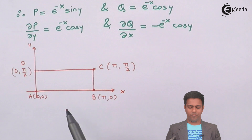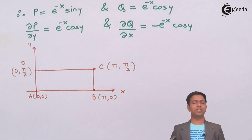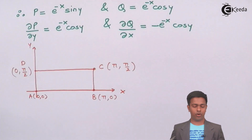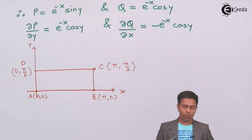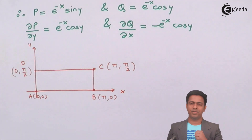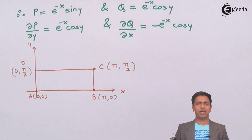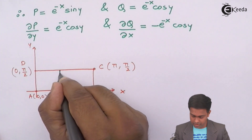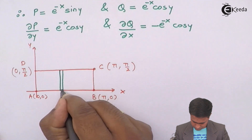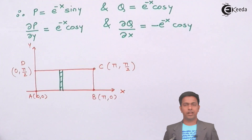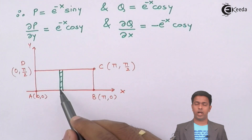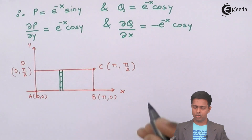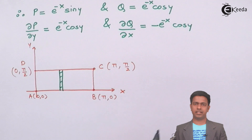From this rectangle, we find the limits of integration. We have a double integral, and to find the limits we consider a strip — either parallel to the x-axis or parallel to the y-axis. Here I'll take a strip parallel to the y-axis. Whenever we take such a strip, we first integrate with respect to y, so we write dy then dx.